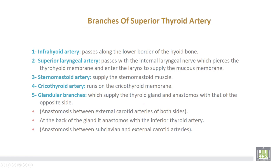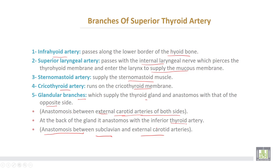Branches of the superior thyroid artery: (1) infrahyoid artery, passing along the lower border of the hyoid bone; (2) superior laryngeal artery, passing with the internal laryngeal nerve, which pierces the thyrohyoid membrane to supply the mucous membrane of the larynx; (3) sternomastoid artery, supplying the sternomastoid muscle; (4) cricothyroid artery, running on the cricothyroid membrane; and glandular branches supplying the thyroid gland, anastomosing with those of the opposite side — this represents an anastomosis between the external carotid arteries of both sides, and at the back of the gland, with the inferior thyroid artery, forming an anastomosis between the subclavian and external carotid arteries.